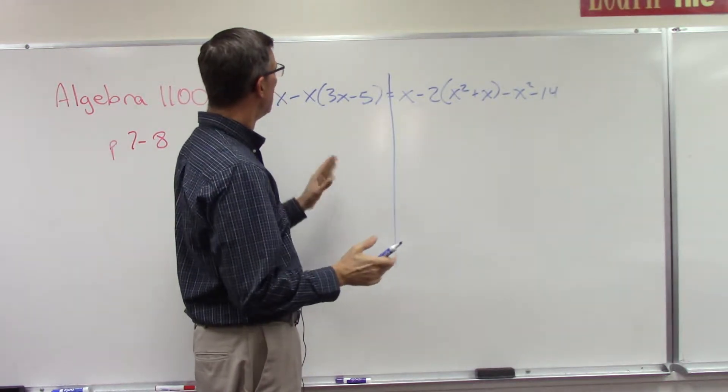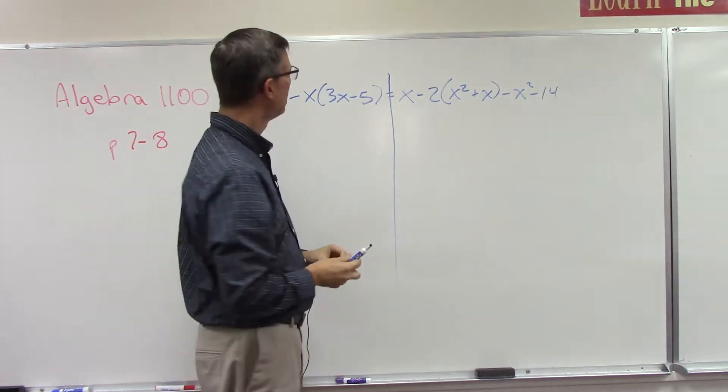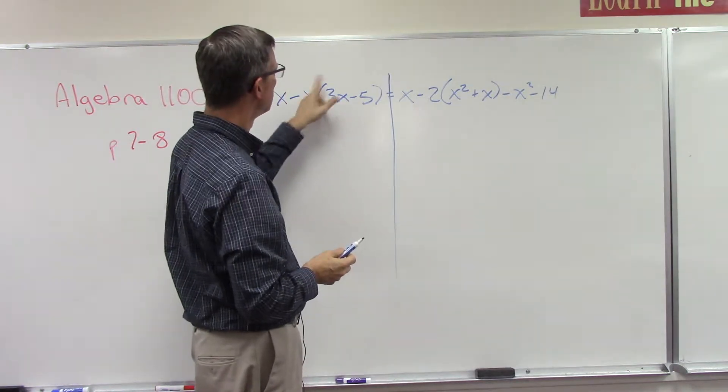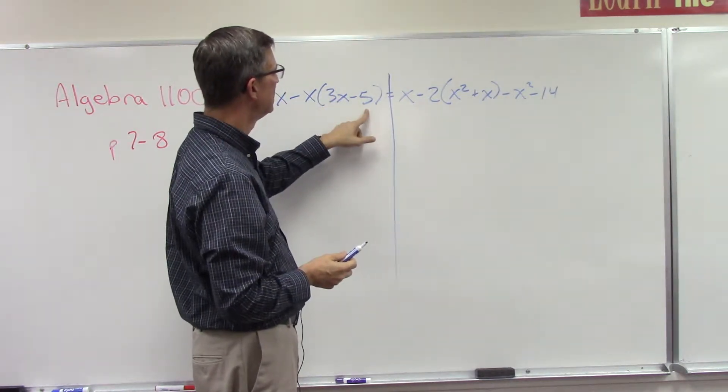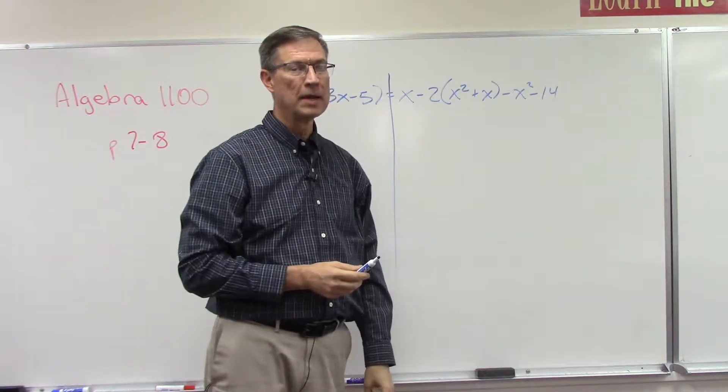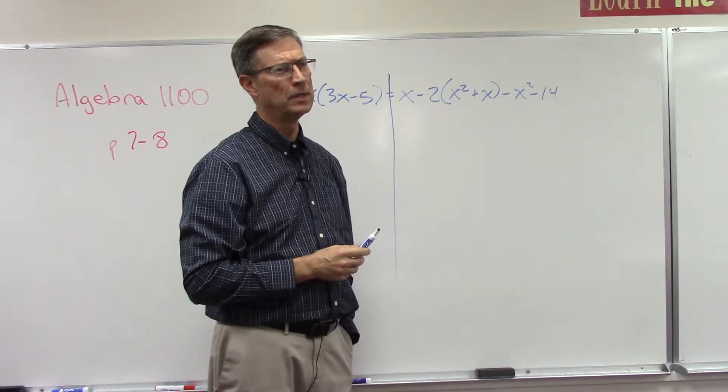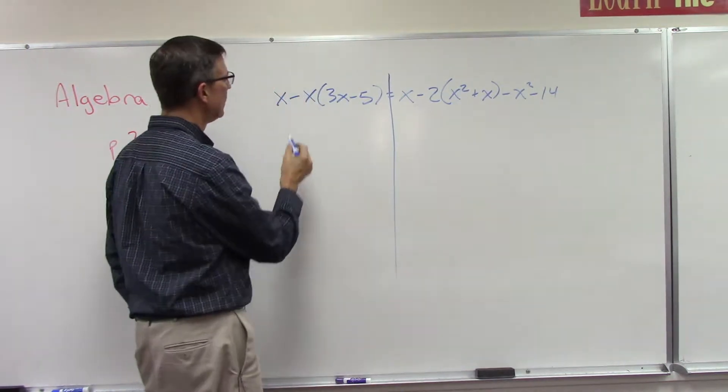All right, so on both sides we can simplify by doing in this case some distributive property times both of these. Over here I'm going to distribute times both of these. And again, I'm going to promise you the most common mistake is going to be with negative signs. But let's be careful and let's see what happens.